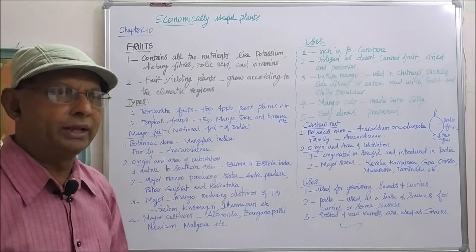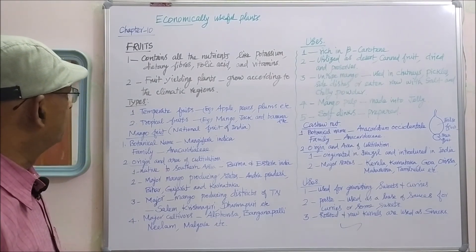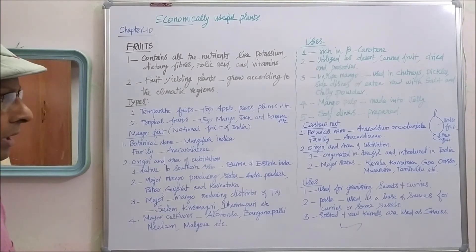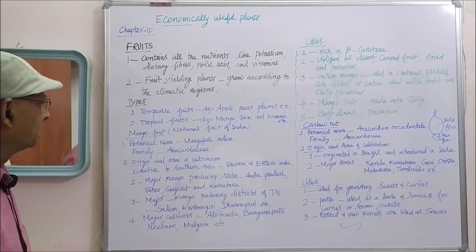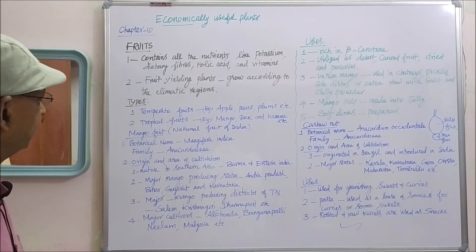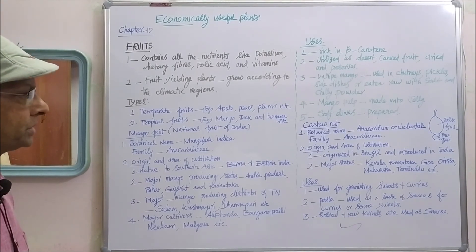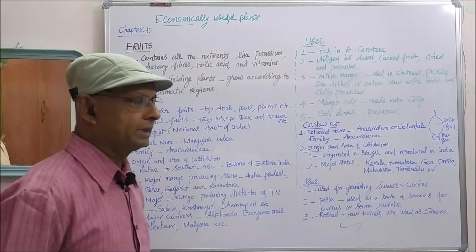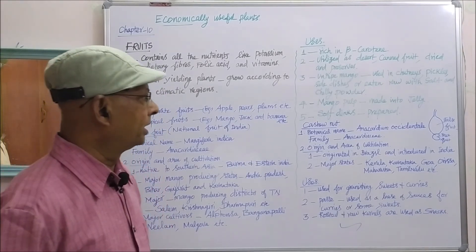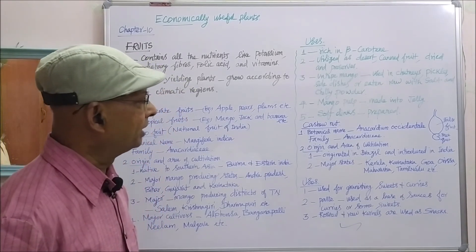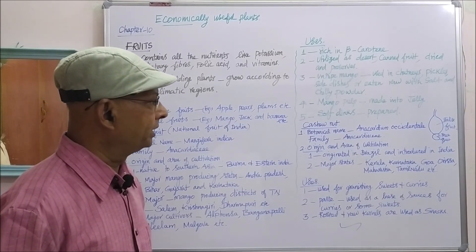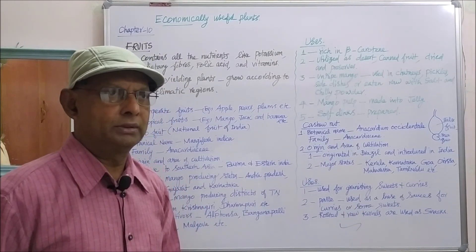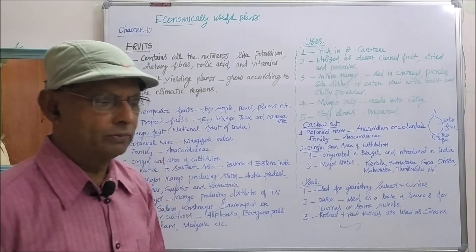So far we have seen the types of fruit, the mango fruit — its botanical name, origin and area of cultivation, and uses. Then cashew nut — its botanical name, family name, origin and area of cultivation, and uses. That is all about the fruits.